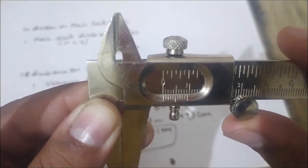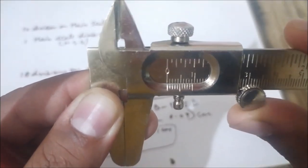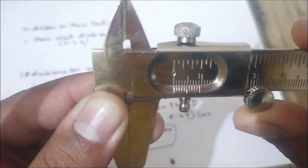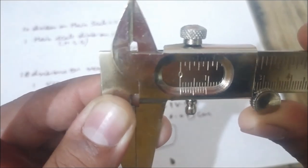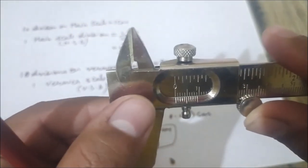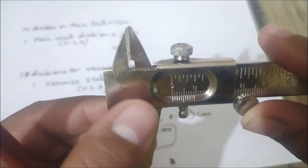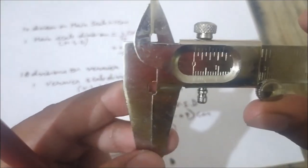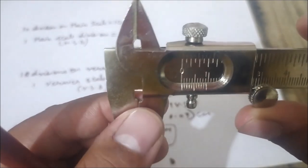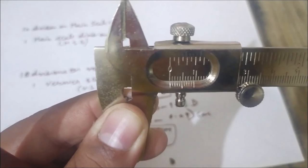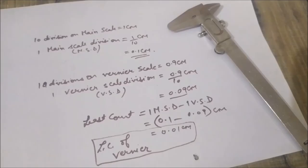Now let's talk about the error in the Vernier caliper. If I close the jaws of the Vernier caliper and the zero of the Vernier scale coincides with the zero of the main scale, there is no error — your device has zero error. If the zero of the Vernier scale gets shifted towards the left of the zero of the main scale, your device has negative error. If you close the jaws and the zero of the Vernier scale is towards the right side of the zero of the main scale, your device has positive error.